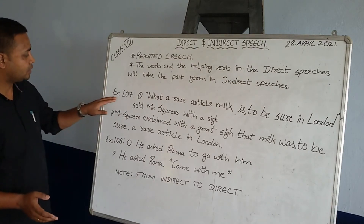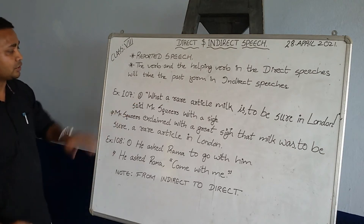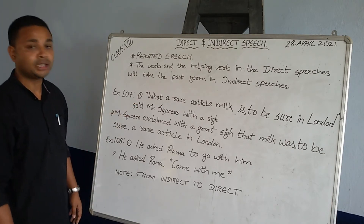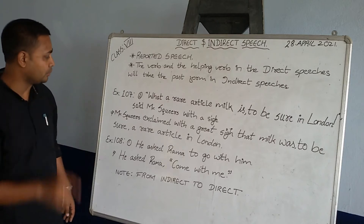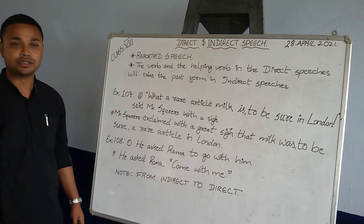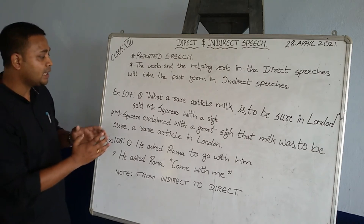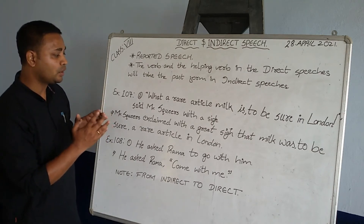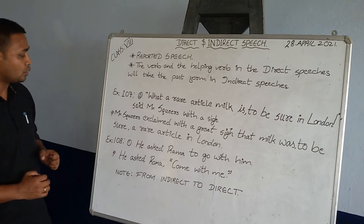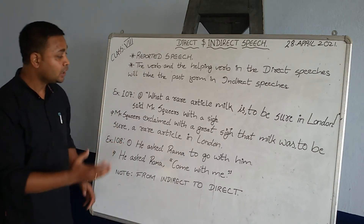Now let's look at Exercise 107, Question 1. In the direct speech you have: 'What a rare article milk is, to be sure, in London!' — there is an exclamatory mark — said Mr. Squeers with a seat. The indirect speech answer is: Mr. Squeers exclaimed with great satisfaction that milk was, to be sure, a rare article in London.